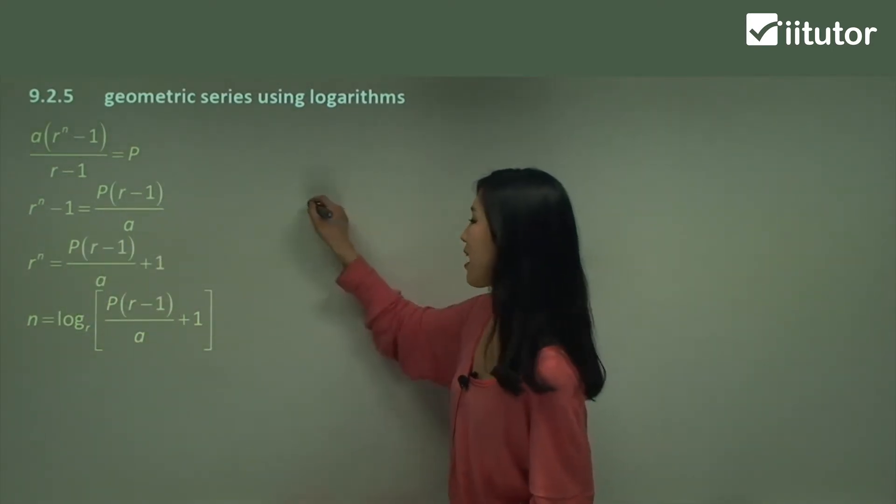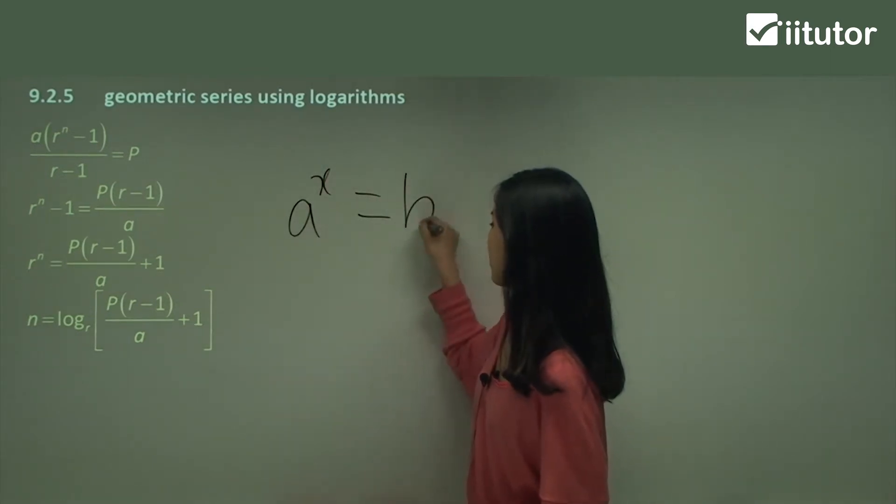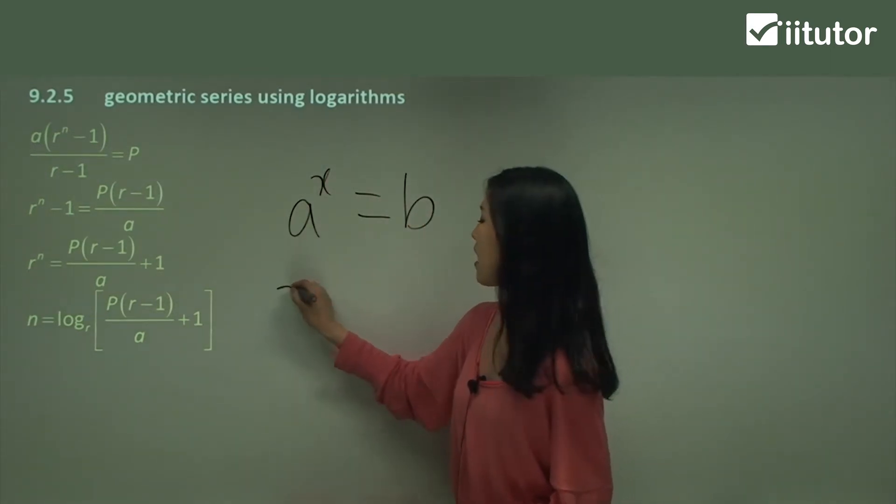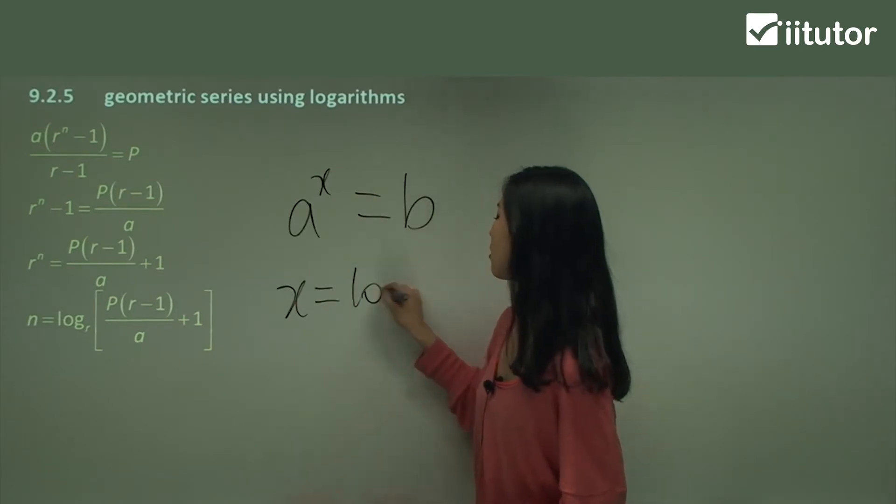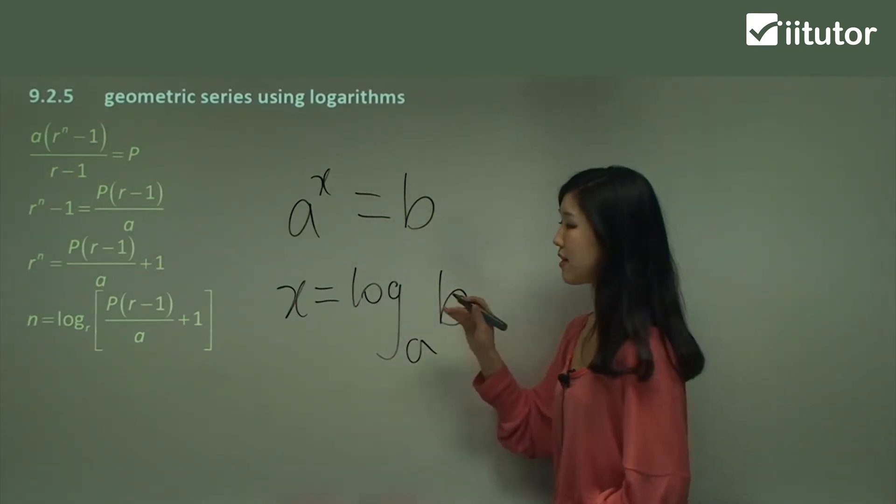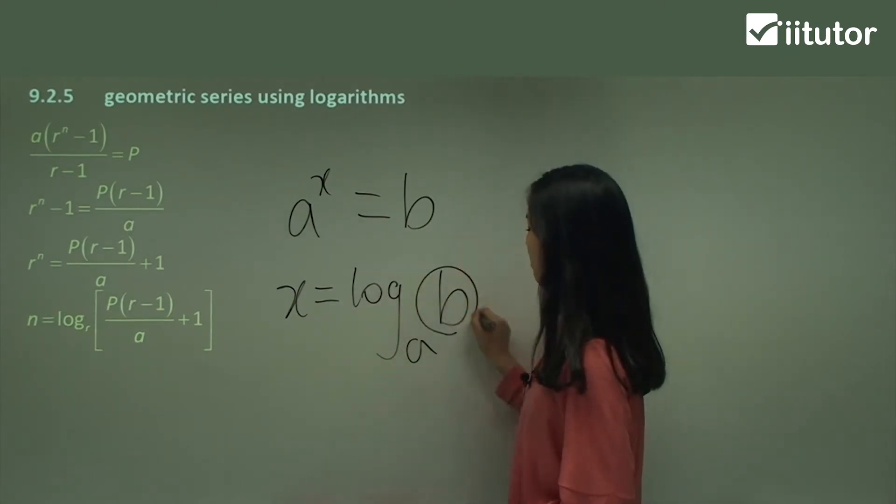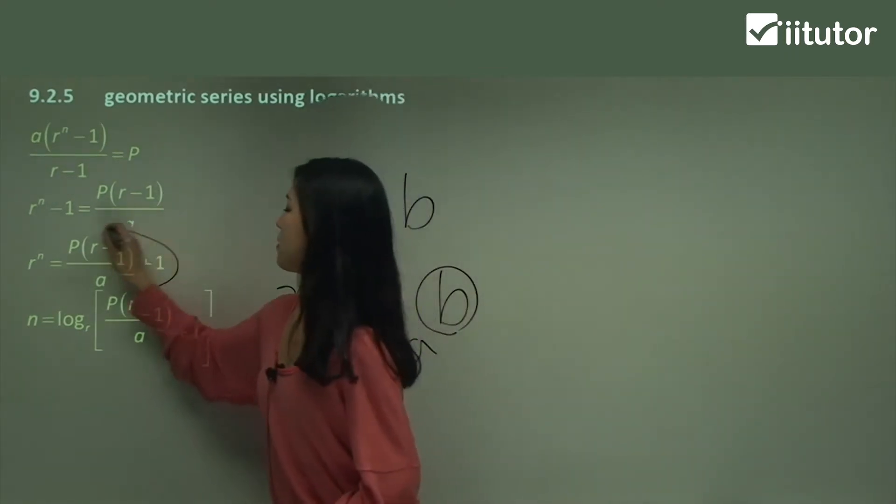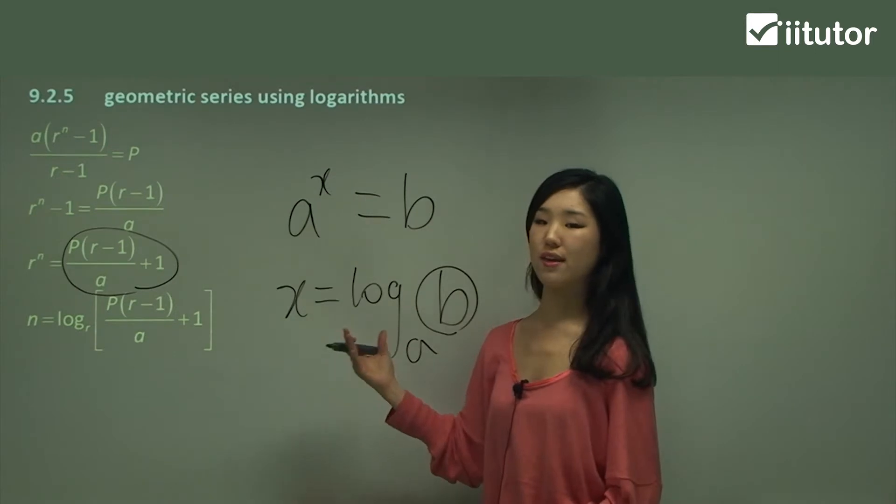So basically guys, again we're using this rule here: if a^x equals b, then x equals log base a of b.